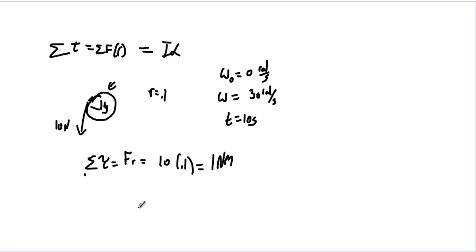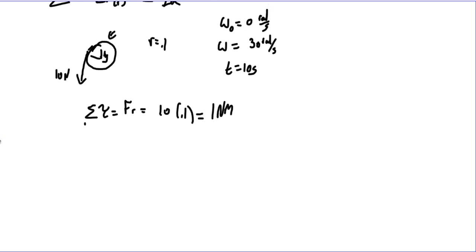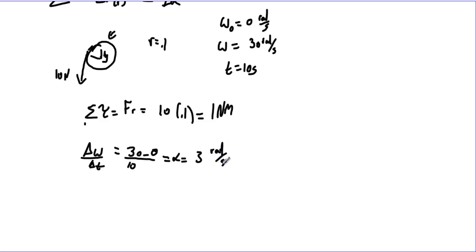The torque causing this to accelerate is 1 newton-meter. That torque also equals I times alpha. Angular acceleration is just like linear acceleration — the rate of change of velocity. So alpha equals change in omega over time: 30 minus 0 divided by 10 equals 3 radians per second squared. Now, 1 newton-meter equals I times 3, so I equals 0.33 kilogram meters squared.